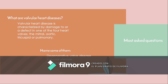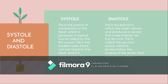Other valvular heart diseases include degenerative valve disease, valvular stenosis, and valvular prolapse. Systole is the period of contraction of the heart, which produces a sound called the first sound — the loudest noise that can be heard in the heart, produced by the closing of the tricuspid and mitral valves. Diastole is the period in which the heart relaxes and produces the second sound, which is less intense and is produced by the closing of the aortic and pulmonary valves.